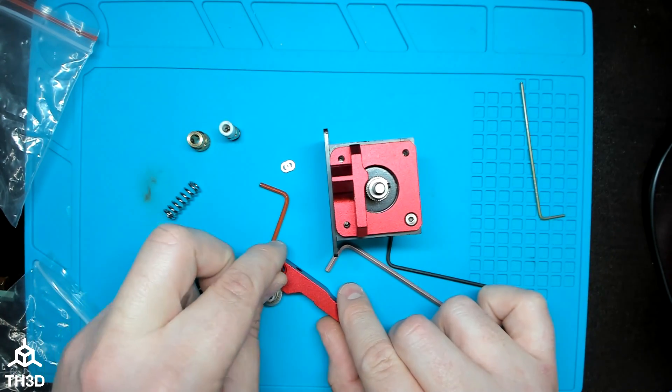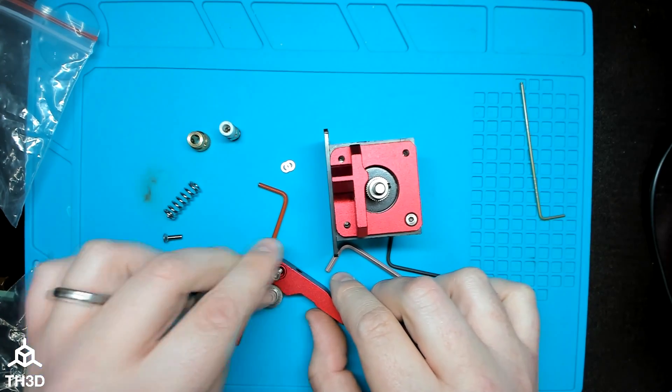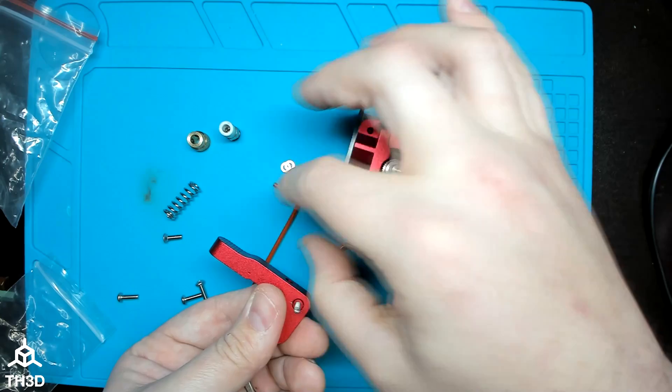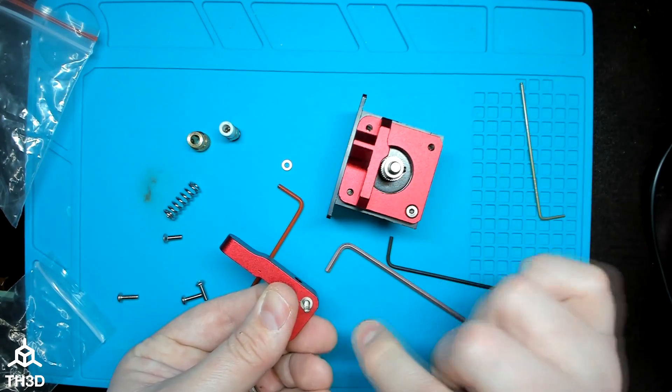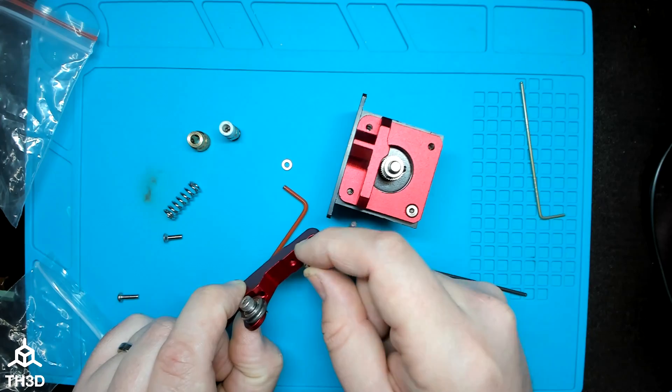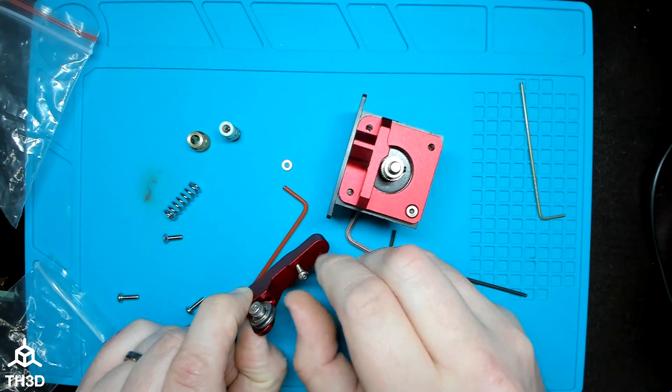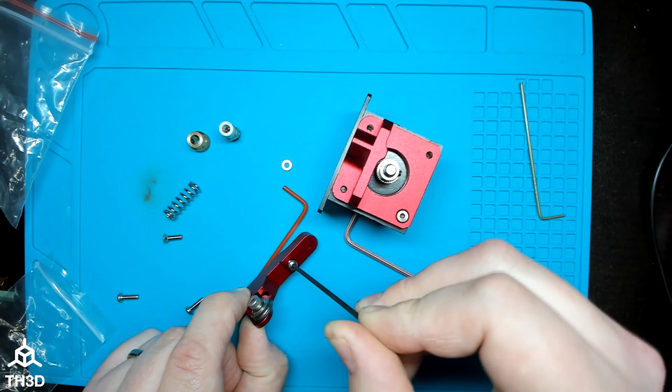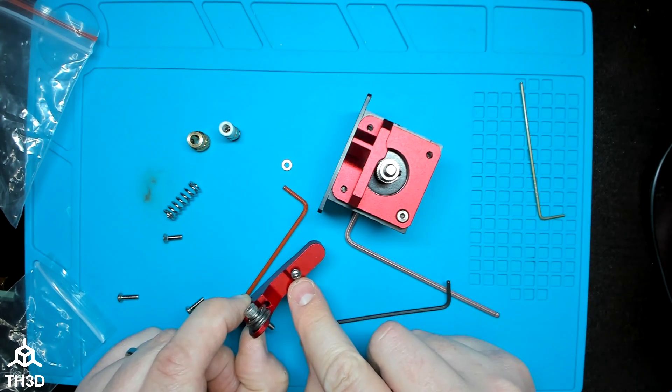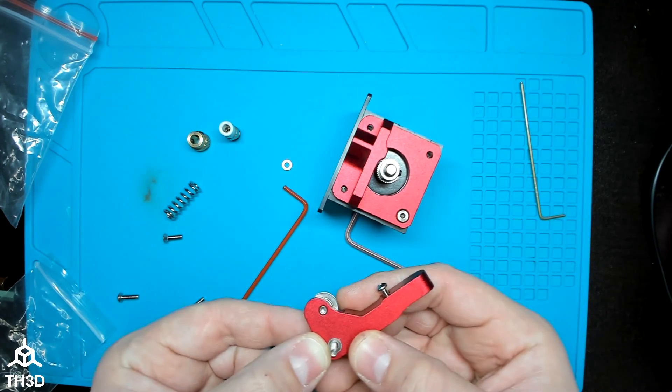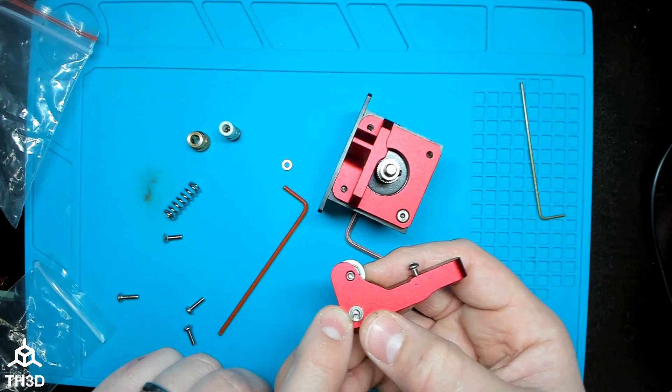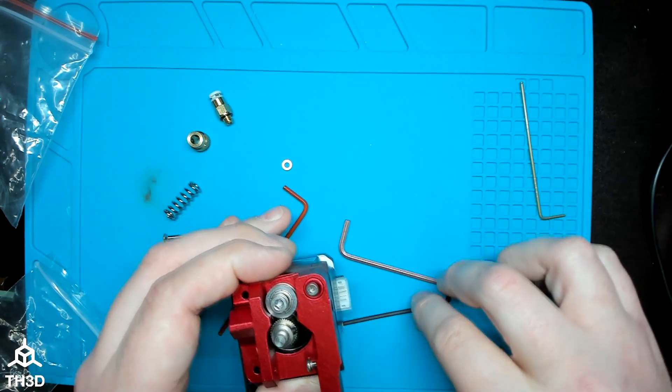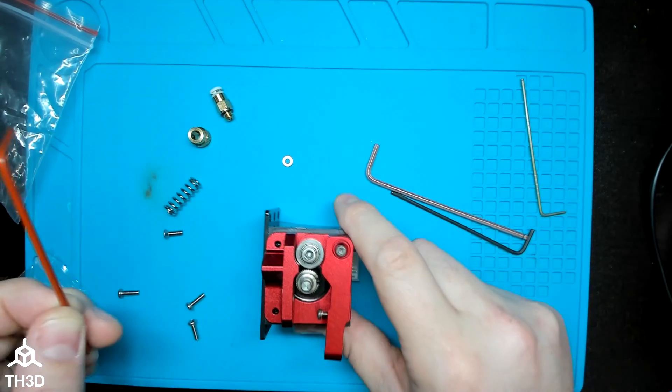Insert the bushing into the arm and then the socket head M3 screw into the arm. Put your finger here, flip it over and take one of the included M3 washers and put it on the screw. Take one of the M3 screws and put it into the arm right here. Use your 2mm hex to snug this up. This is the retaining screw for our tension spring. So making sure we don't drop the washer off, place the arm on the extruder and then tighten the M3 bolt down.